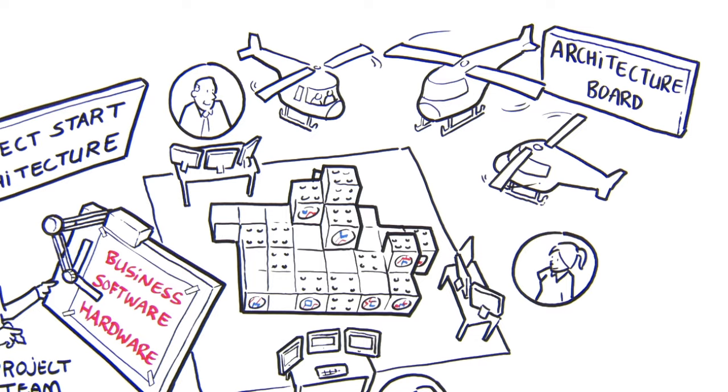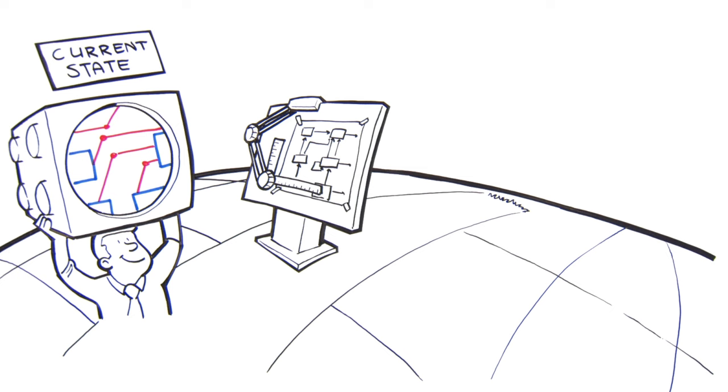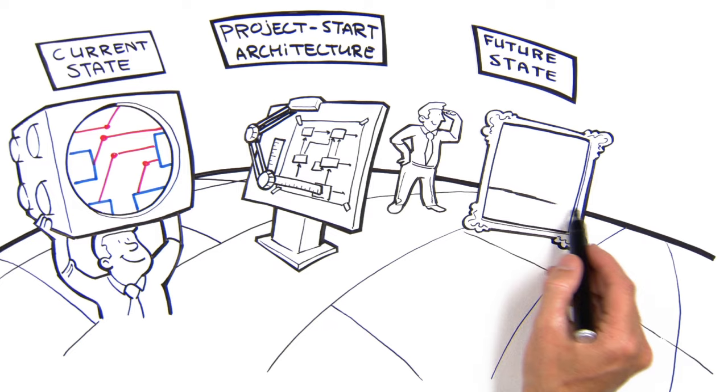Summarized, enterprise architecture is about three things: we take a look at the existing situation, we help to develop and evaluate designs, and we create a sketch for the future so that everyone understands the direction we're heading.